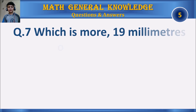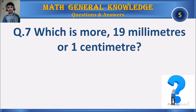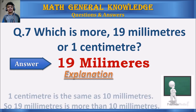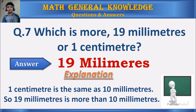Question 7: Which is more — 90 millimeters or 1 centimeter? Your time starts. The answer is 90 millimeters. One centimeter is the same as 10 millimeters, so 90 millimeters is more than 10 millimeters.